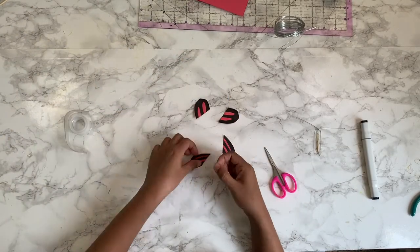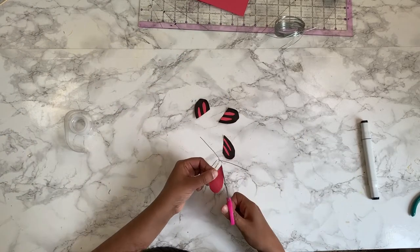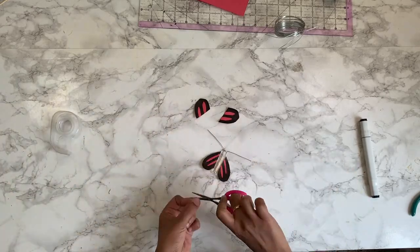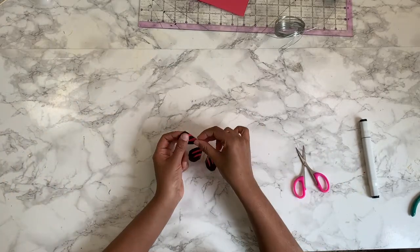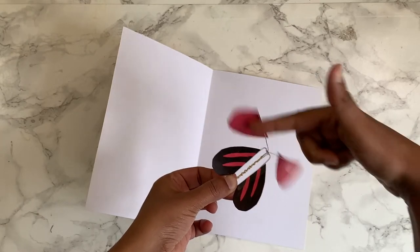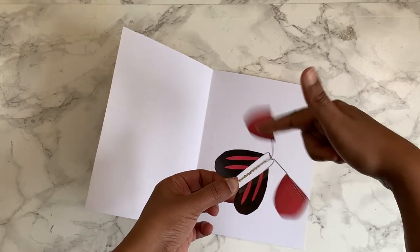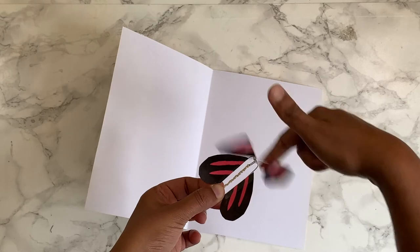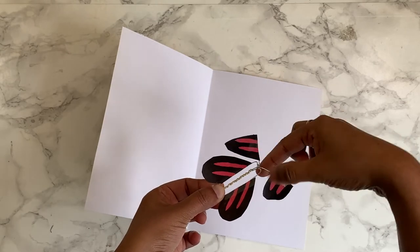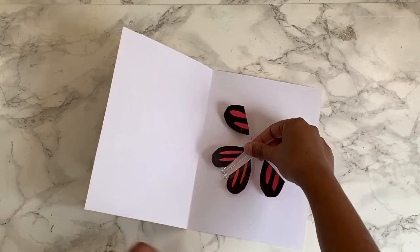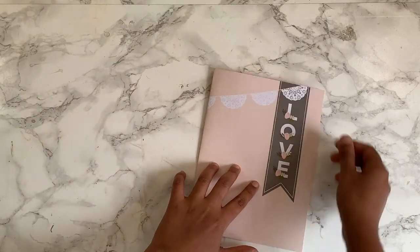The butterfly is now ready. You can draw designs on the wings however your heart desires. Now let's put this to test. Wind it up by spinning the top part of the butterfly. I recommend winding it until you see the rubber band twisting to create the second layer. Place it inside the card and let's see how it works.